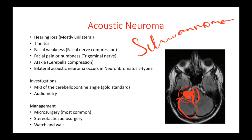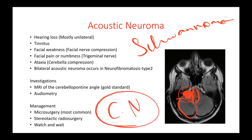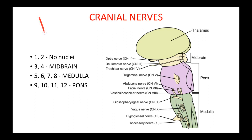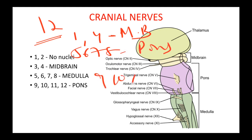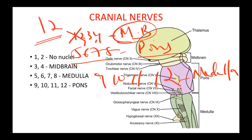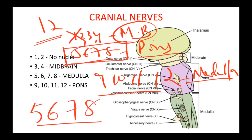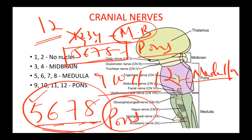We have 12 cranial nerves. The first four cranial nerves go above the pons — that is the midbrain. The next four — 5, 6, 7, 8 — pass through the pons, and 9, 10, 11, 12 pass through the medulla oblongata. Note that the first and second cranial nerves do not have nuclei, so 3 and 4 go through the midbrain. Since acoustic neuroma occurs at the cerebellopontine angle in the pons, cranial nerves 5, 6, 7, and 8 will be affected — especially 5, 7, and 8: the trigeminal, facial, and vestibulocochlear nerves.